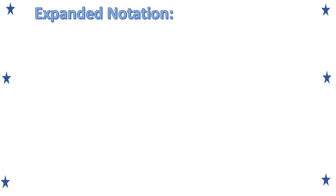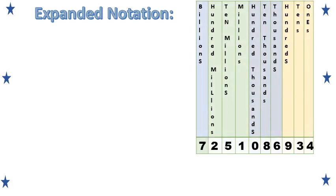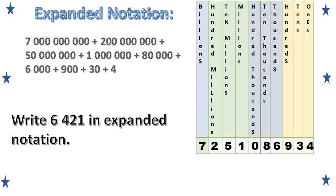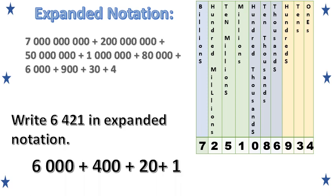Expanded notation is writing a number to show the value of each digit. The number on the chart, when written in expanded notation, would look like this: 7 billion plus 200 million plus 50 million plus 1 million plus 80,000 plus 6,000 plus 900 plus 30 plus 4. Let's look at another example — write 6,421 in expanded form. We are going to show the value of each digit starting with the digit 6: 6,000 plus 400 plus 20 plus 1.